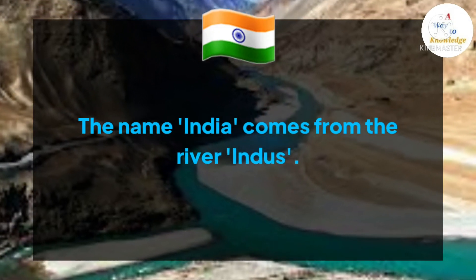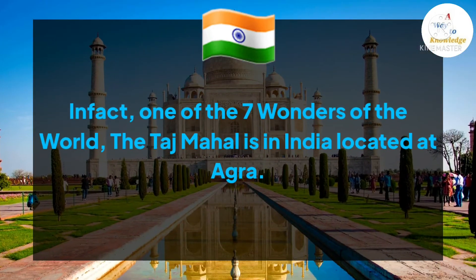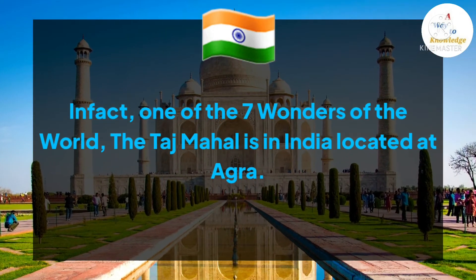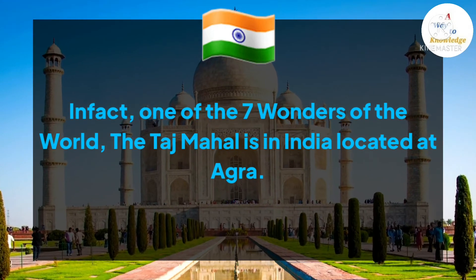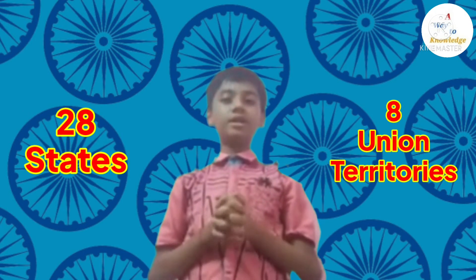The name India comes from the river Indus. In fact, one of the seven wonders of the world, the Taj Mahal, is in India, located at Agra. Later on, I will also tell you that Agra is in which state. India has 28 states and 8 union territories. Now let's learn them one by one.